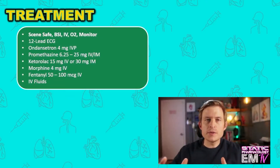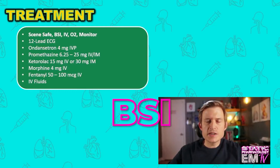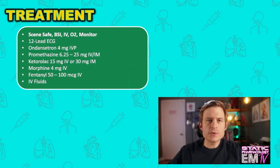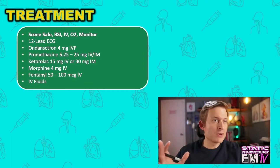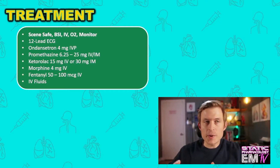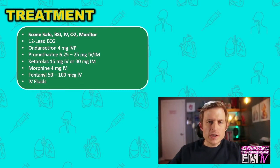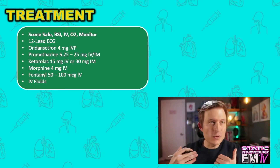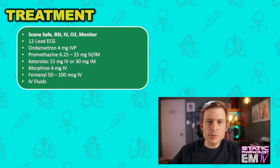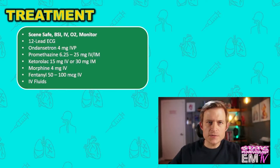I'll begin treatment by going through scene safe, BSI, IV, O2, monitor. The next thing I'll want to do is get a 12-lead ECG just to make sure this is not some sort of underlying MI presenting with back pain or atypical chest pain. This patient's age is over my comfortable limit of 35, so anyone over 35 with a complaint involving the abdomen, the flank, or anything chest and above — go ahead and perform a 12-lead ECG because it is a great diagnostic tool for ruling out hidden MIs. It's cheap and it's non-invasive, so go ahead and do it.